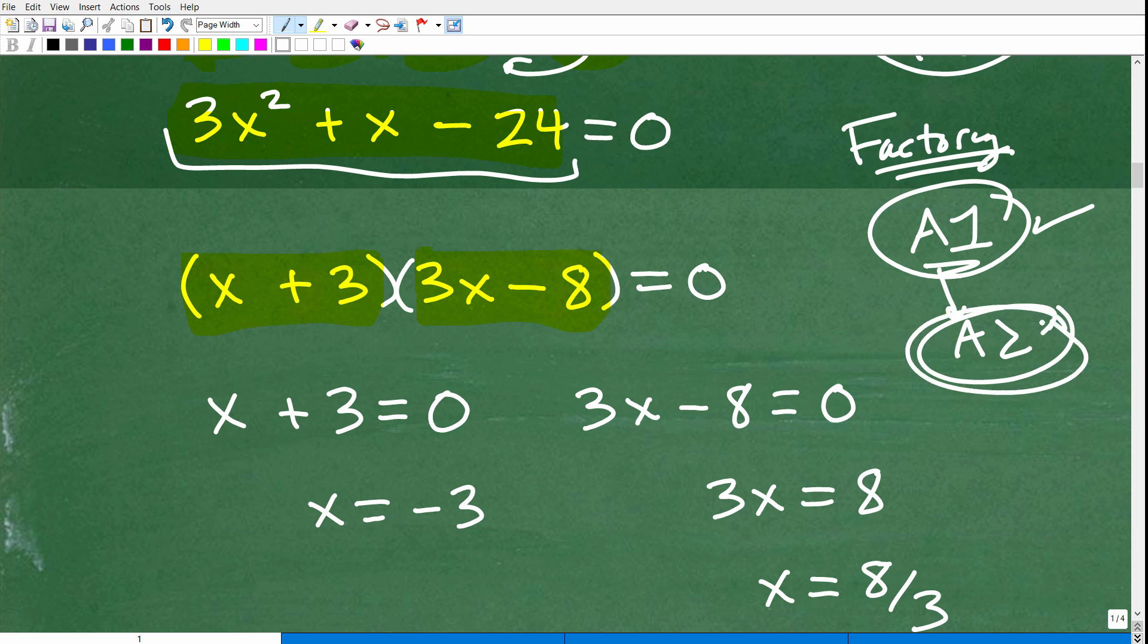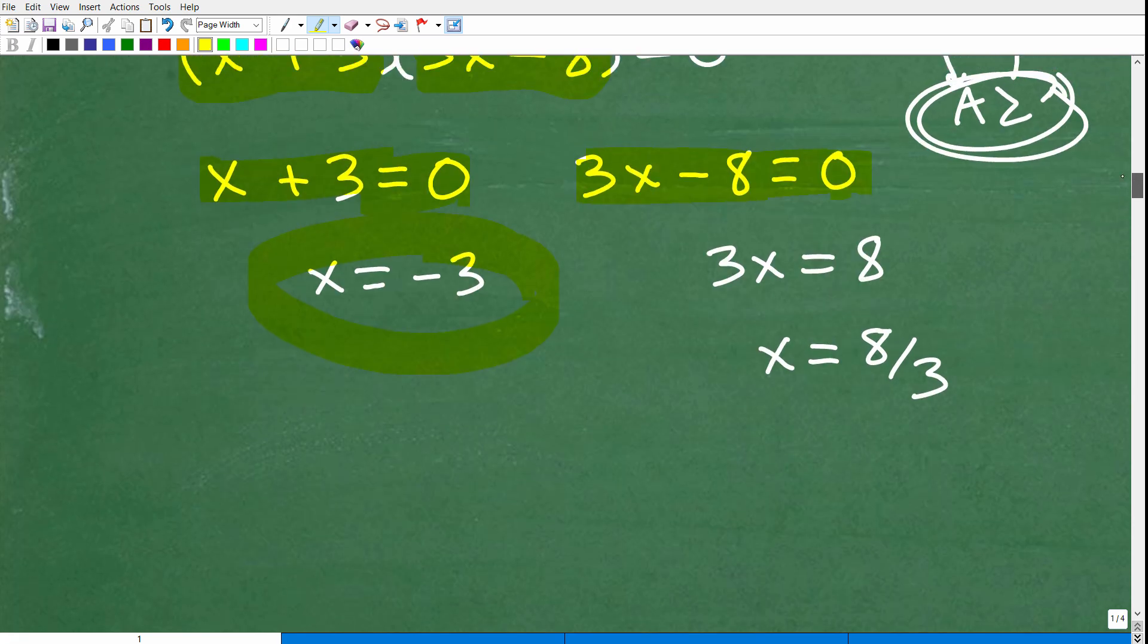If you're in Algebra 2 and you're rusty on this, go back and review and get really good at this stuff because you're going to need it in Algebra 2, college algebra, and definitely more advanced mathematics. So we have x plus 3 times 3x minus 8 equals 0. Now I can set each factor equal to 0. That's x plus 3 equals 0, and 3x minus 8 equals 0, and solve for x. So here I get x equals negative 3. That's one solution. And here I get x equals 8 thirds.